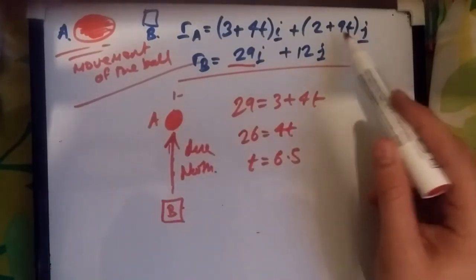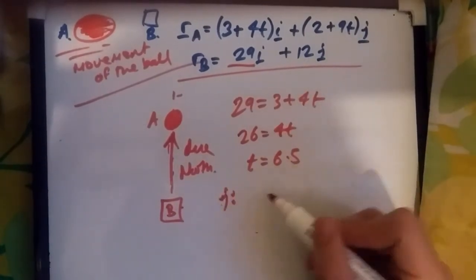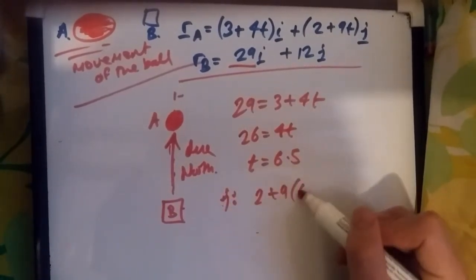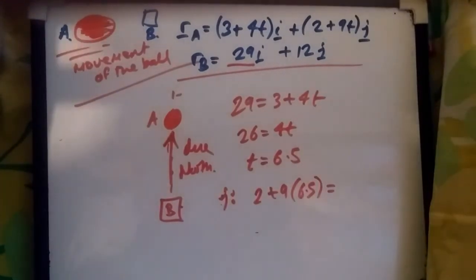So when t is 6.5, where are we exactly at j? Well, at j, t is at 2 plus 9 times 6.5. And this, my friend, should give you 60.5.